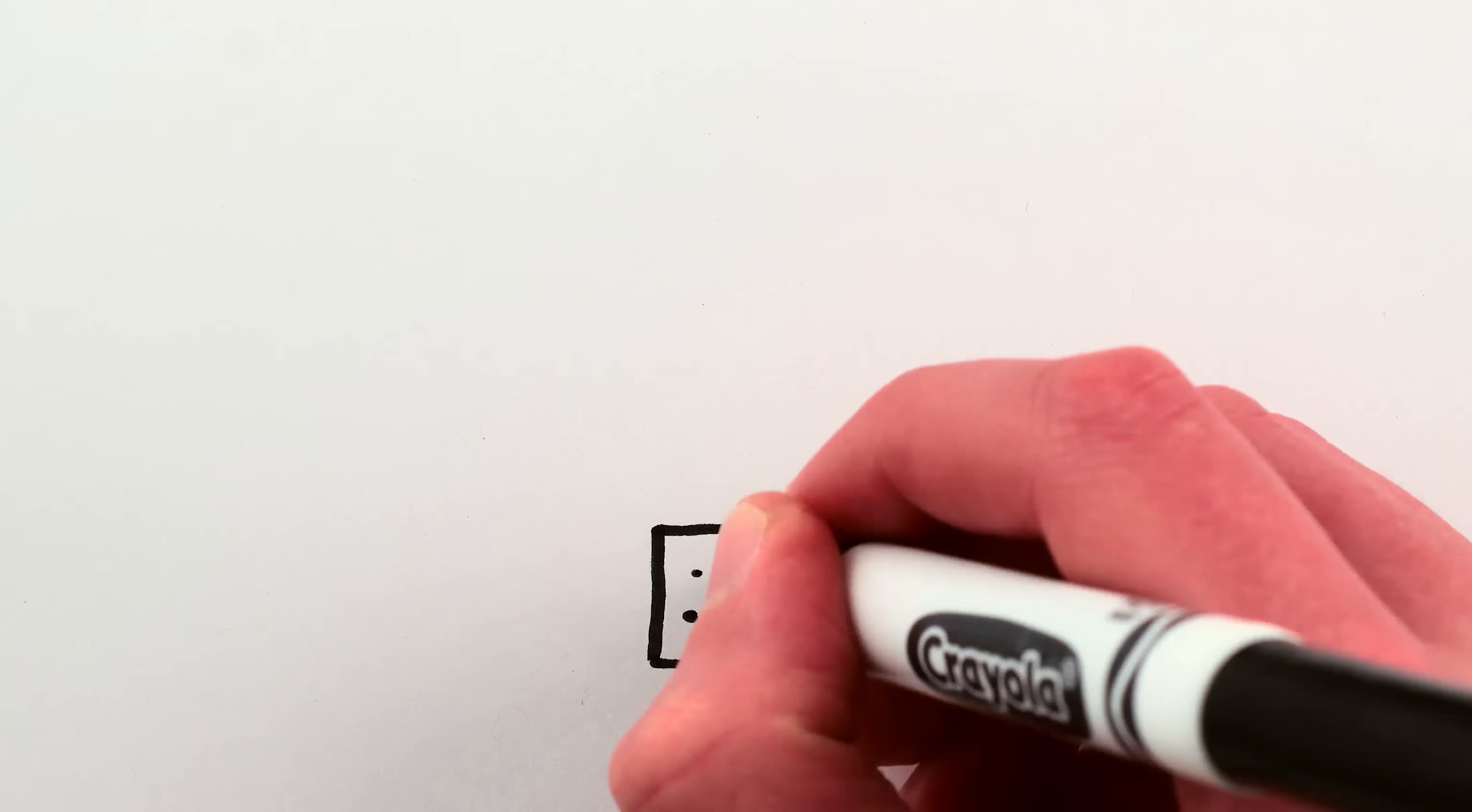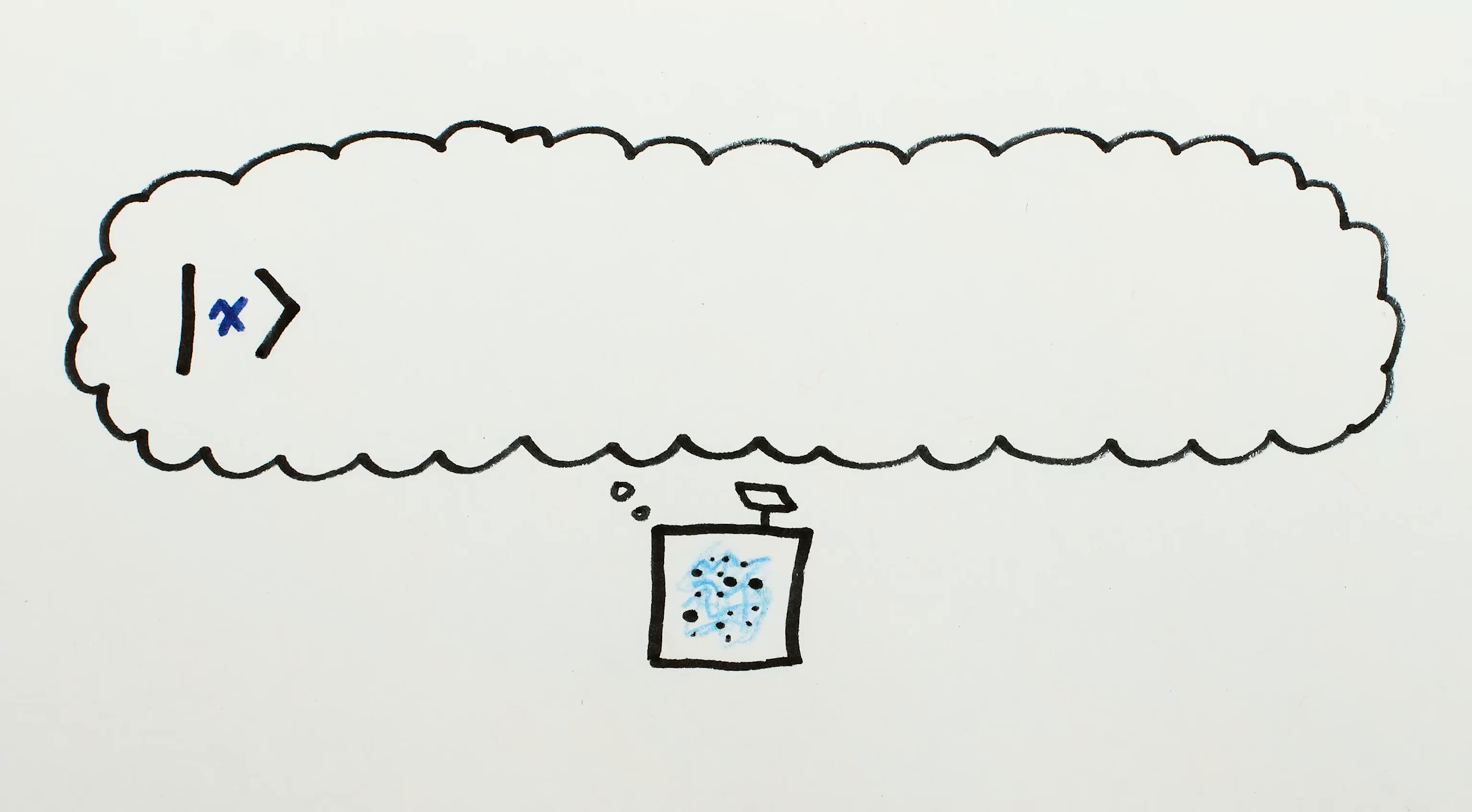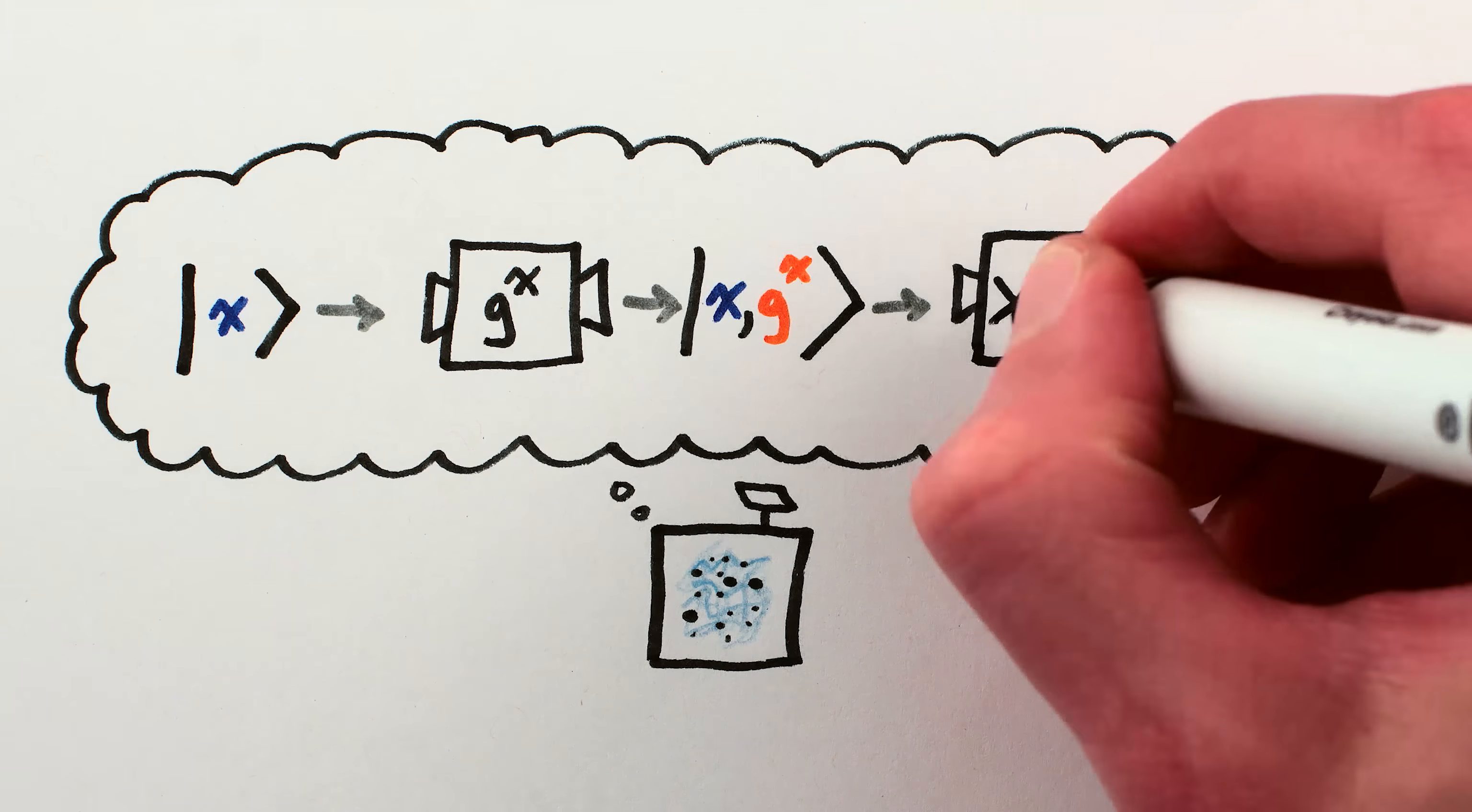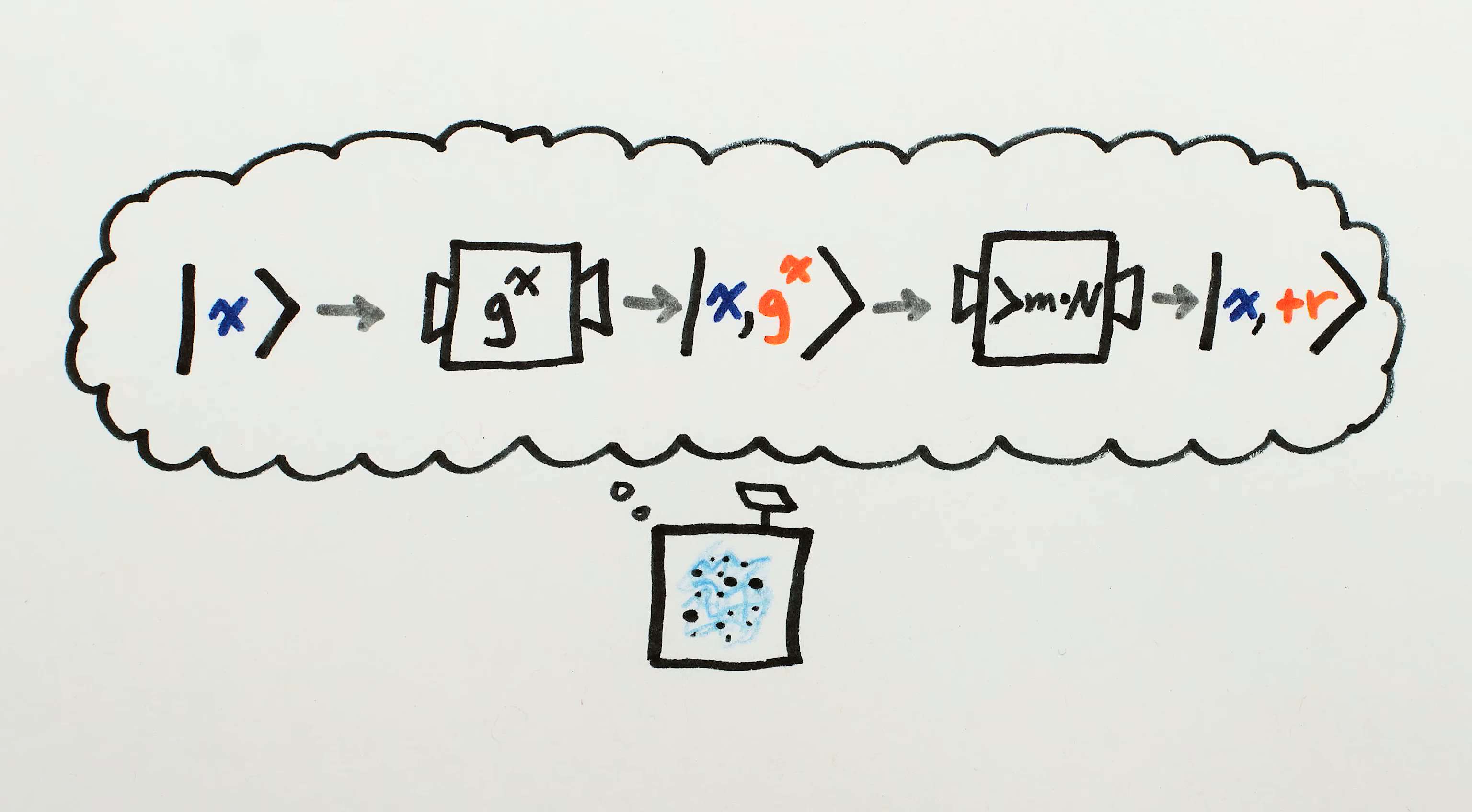So to begin the quantum computation, we need to set up a quantum mechanical computer that takes a number x as input and raises our guess to the power of x. For reasons we'll see later, we need to keep track of both the number x and our guess to that power. The computer then needs to take that result and calculate how much bigger than a multiple of n it is. We'll call that the remainder, and we'll write it as plus something for whatever something the remainder is. Remember, we want a remainder of 1.